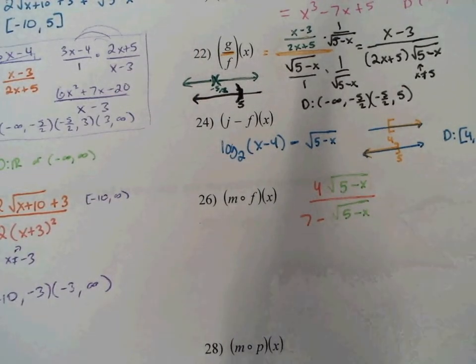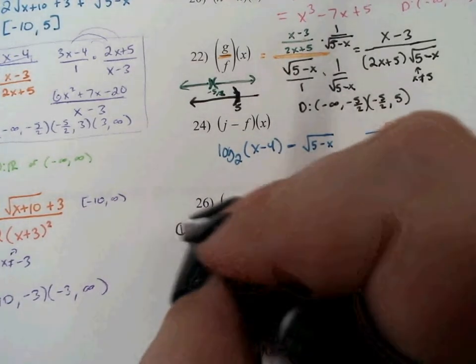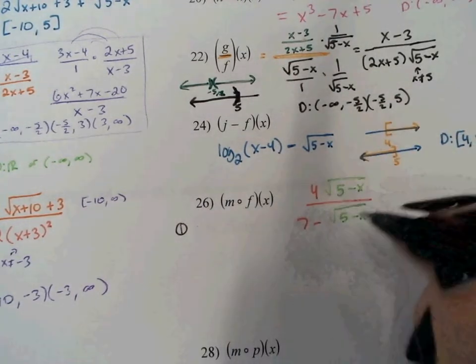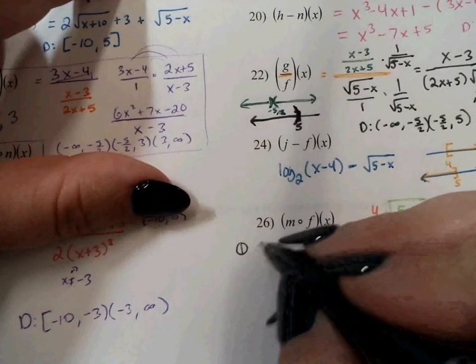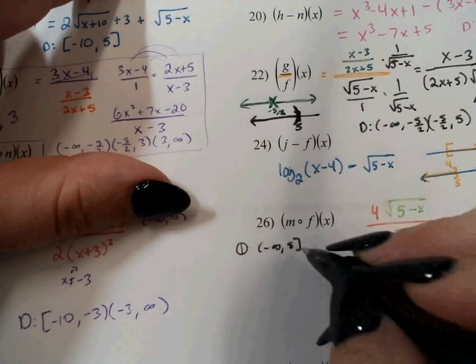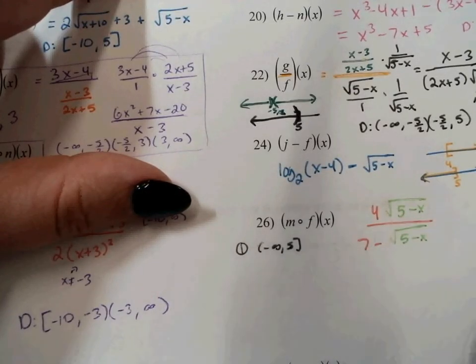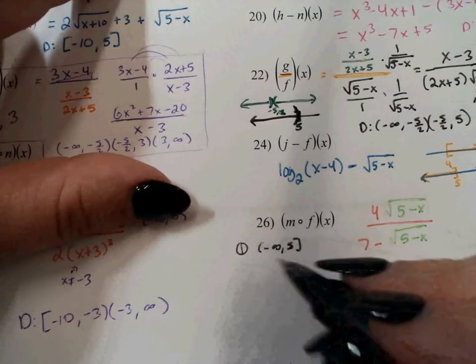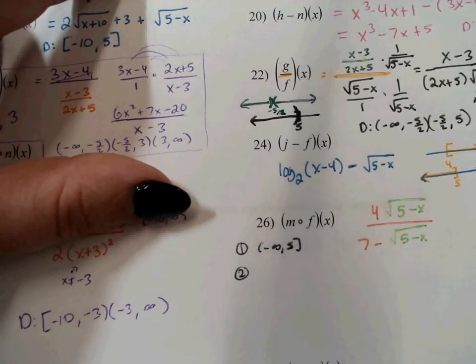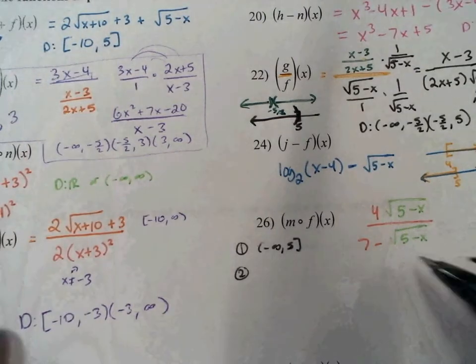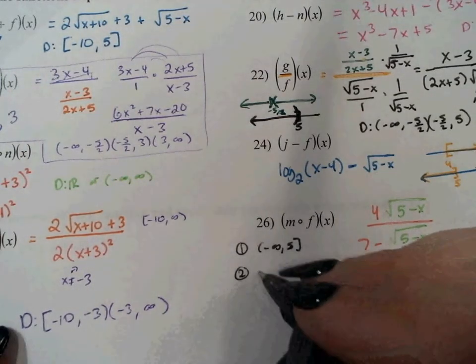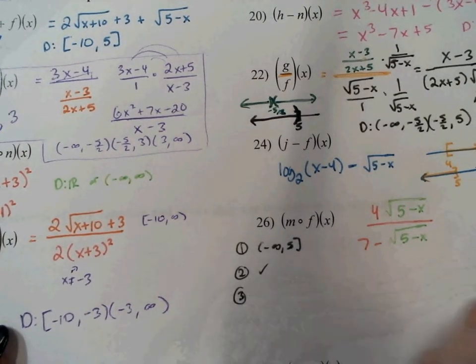Step 1: find the domain of your interior function — that's negative infinity up to 5. Step 2: perform the composition and simplify. I plugged f into m — there's nothing more to simplify. Step 3: look for new domain issues. The new domain issue is that the denominator, 7 minus the square root of 5 minus x, cannot equal 0.